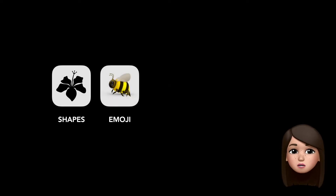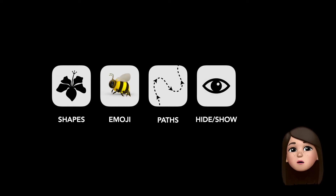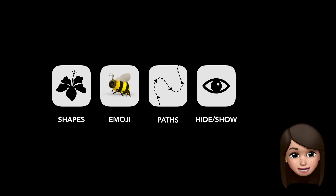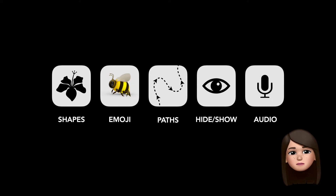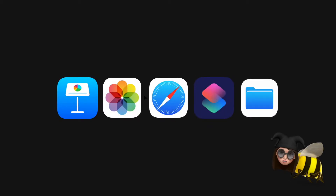We are going to build our Keynote animation using shapes and emojis and simple motion paths. We are also going to use build-in and build-out animations, which we would normally use for text and images to enter and exit a slide, for some magic tricks, as well as layering up audio. For this activity you will need Keynote, Photos, Safari, Siri Shortcuts and Files.